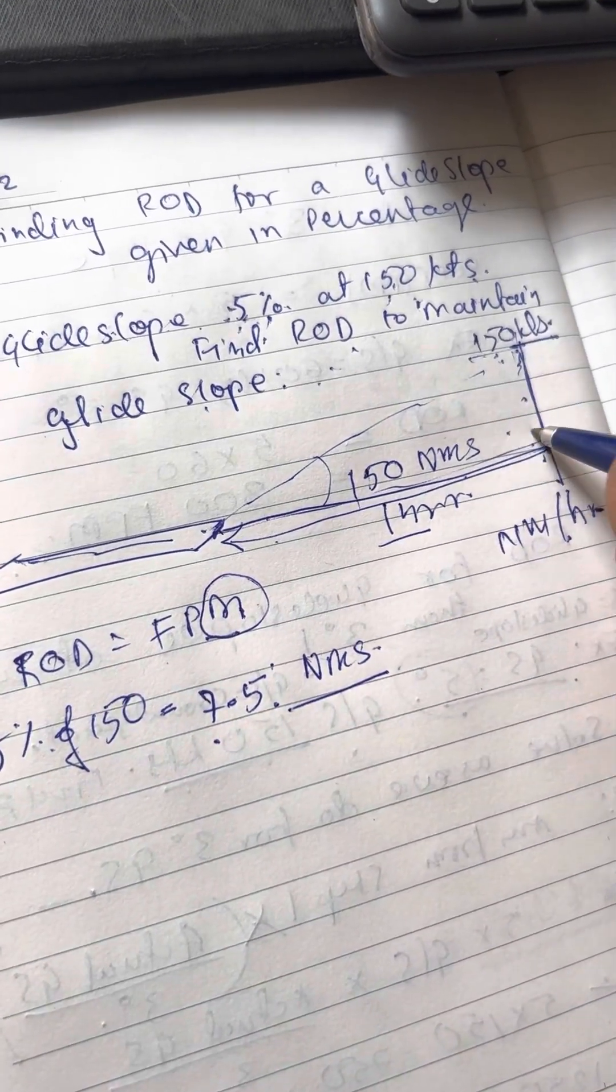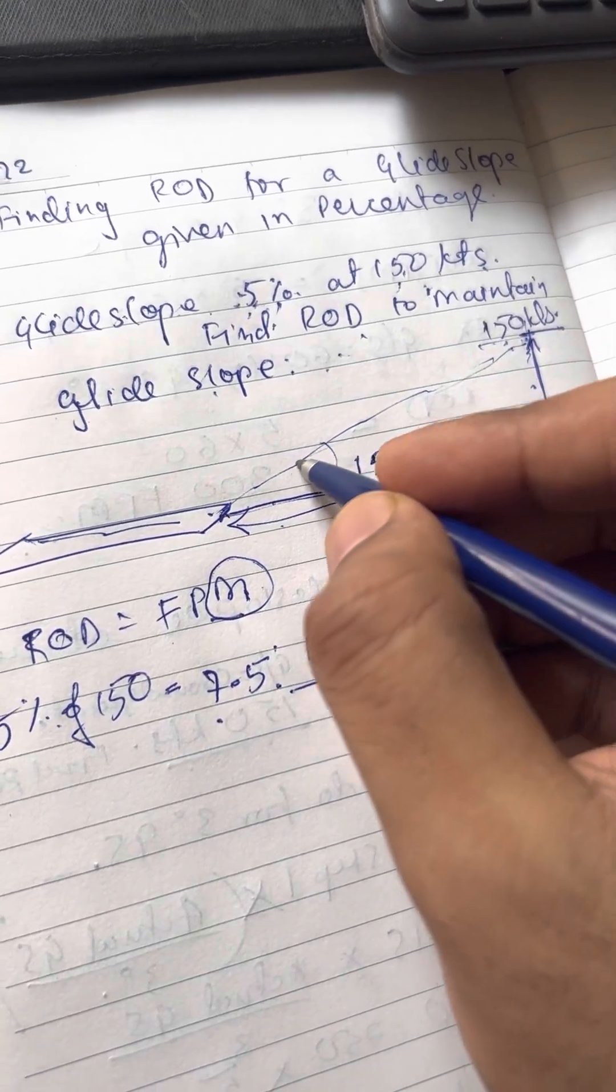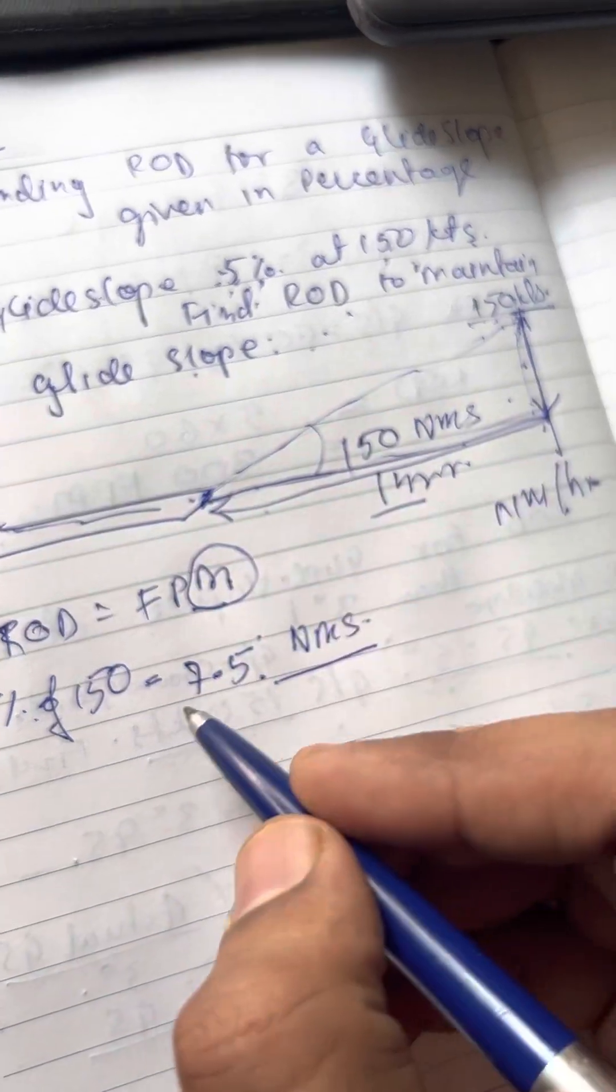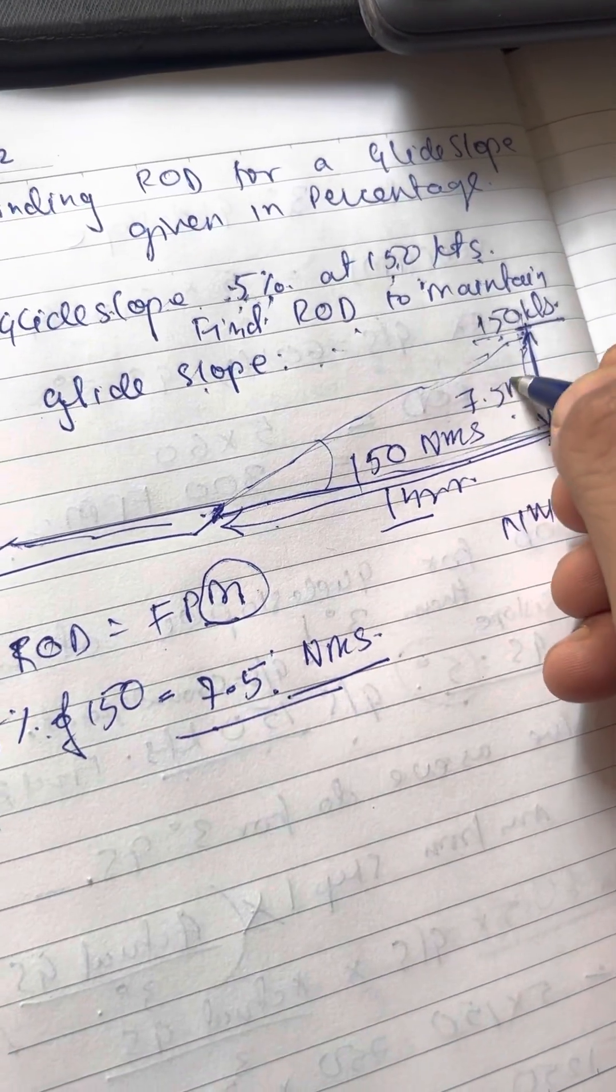I am losing my vertical height. With respect to the cross distance, the loss in my vertical height will be 7.5 nautical miles.